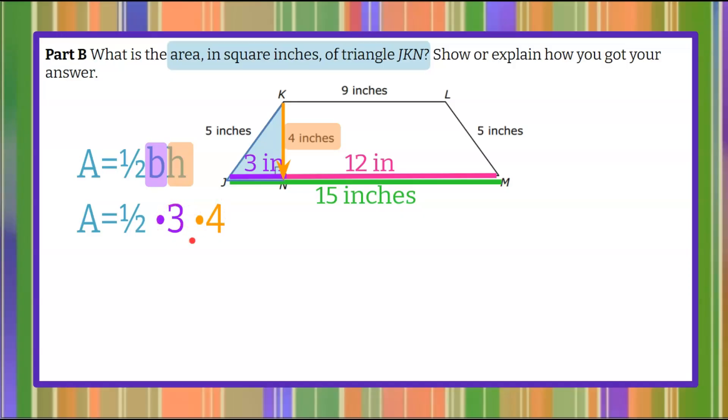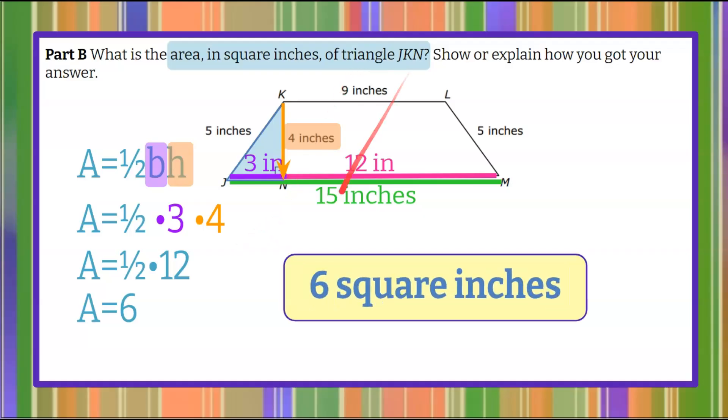Let's multiply 3 by 4. That product is 12. Half of 12 is 6. So we know that the area of triangle JKN is 6 square inches.